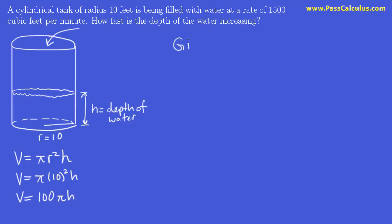Now let's write our given information and what we want. We're given that water is being poured into the tank at 1500 cubic feet per minute, so the volume is changing at dV/dt = 1500. What are we looking for? How fast is the depth increasing? So dh/dt, where h is the depth or height of the water in the tank. This is what we want, that's the goal of this problem.